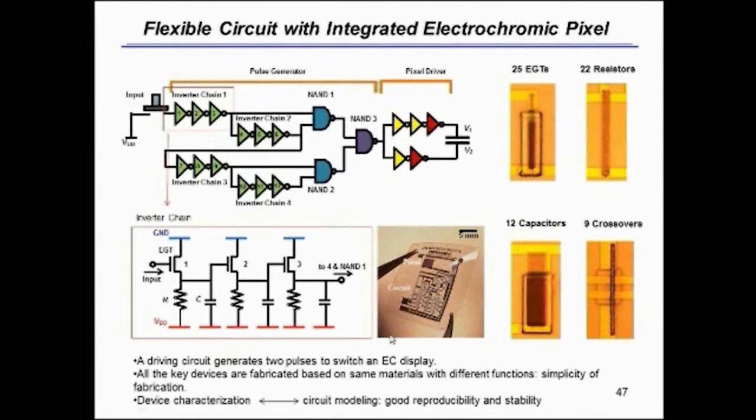This is an image of the circuit on a polyester substrate, and basically it has an electrochromic pixel that we've printed by Aerosol Jet and a series of transistors or circuitry to control the turning on of this pixel.